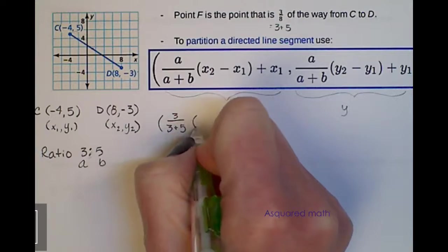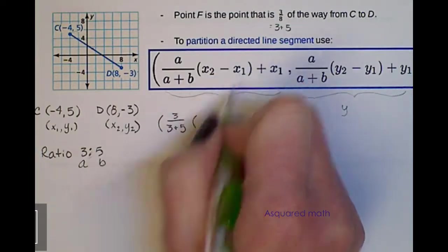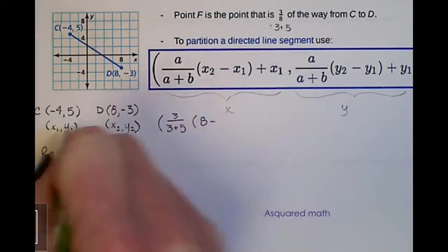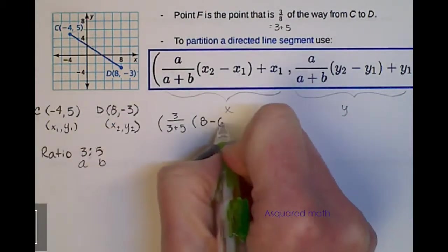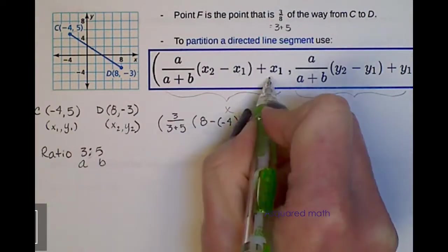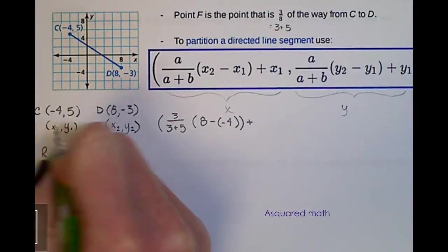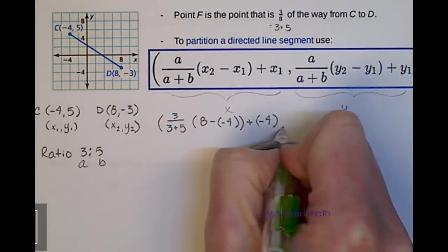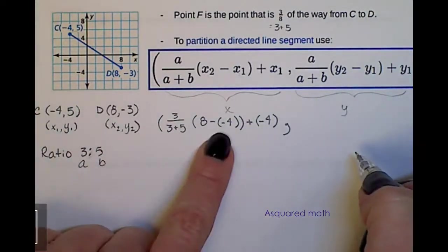And it's multiplied by the change in our x, x2 minus x1. x2 is 8 minus x1 is negative 4. Close those parentheses, and then we add x1. x1 is negative 4.